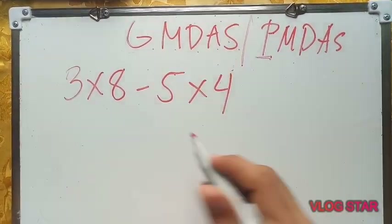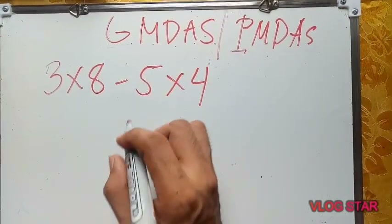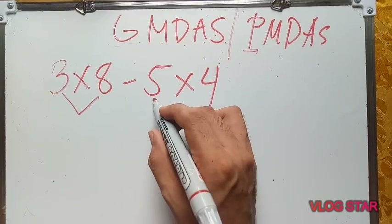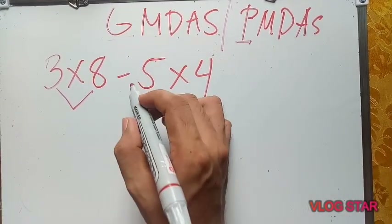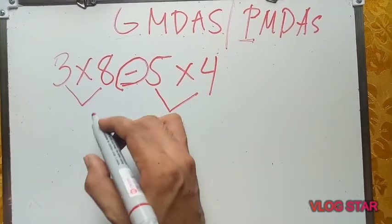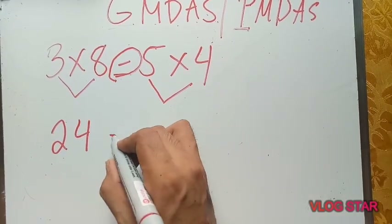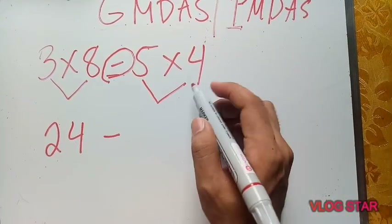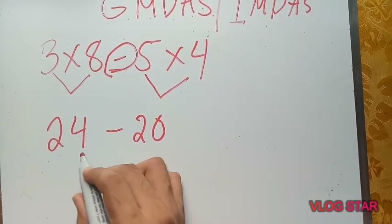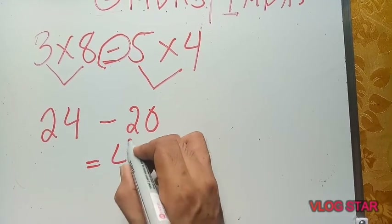Another example: 3 times 8 minus 5 times 4. What do we do first? We multiply before we proceed to subtraction. 3 times 8 equals 24, and 5 times 4 equals 20. Then 24 minus 20 equals 4.